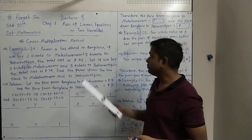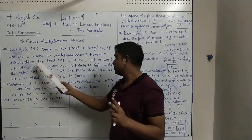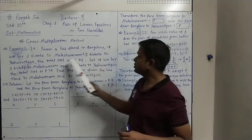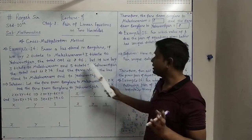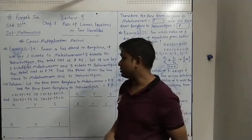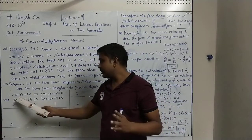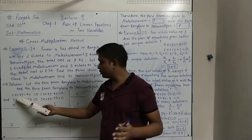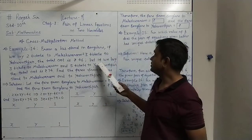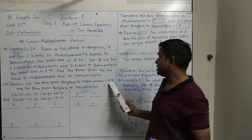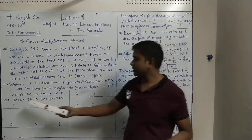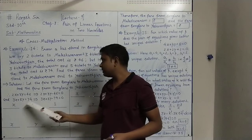For the first condition: 2 tickets to Malishwaram at fare X gives 2X, plus 3 tickets to S1 Pool at fare Y gives 3Y. So 2X plus 3Y equals 46 — that is the total cost of 5 tickets. For the second condition: 3 tickets to Malishwaram gives 3X, plus 5 tickets to S1 Pool gives 5Y. The total 3X plus 5Y equals 74.